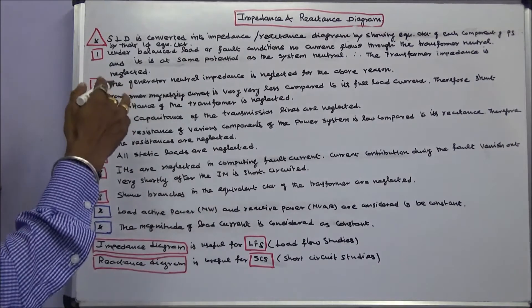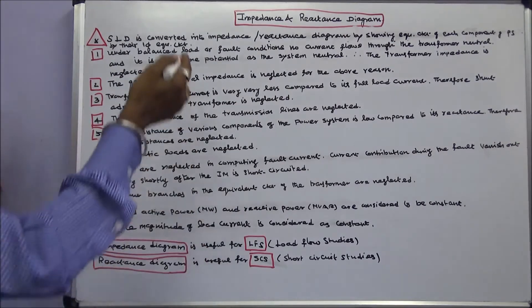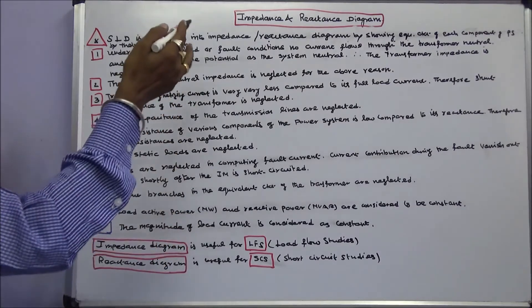By the single phase equivalent circuit. There are eight assumptions used to draw the impedance diagram.